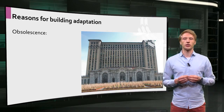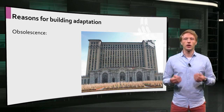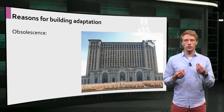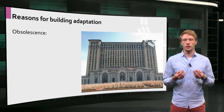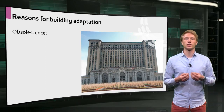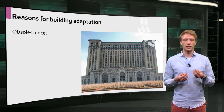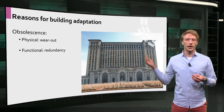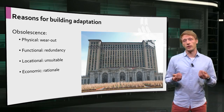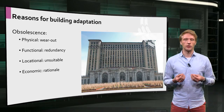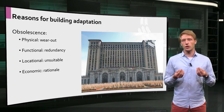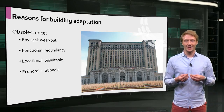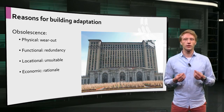But what are the reasons for building adaptation? Why can't we just design and build good buildings that will function properly for centuries? This is because over time the usefulness of buildings for their original function diminishes. This process is called obsolescence. Obsolescent buildings always lack utility. There are four forms of obsolescence: physical, functional, locational, and economic. A building might physically wear out, its original function might become redundant, its location can become unsuitable, or its economic rationale is removed. So obsolescence can affect any building, but it is also a great opportunity for adaptation.